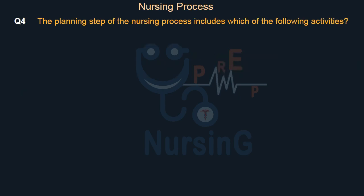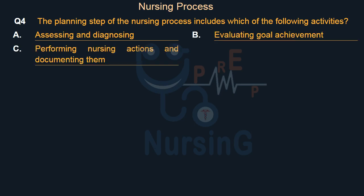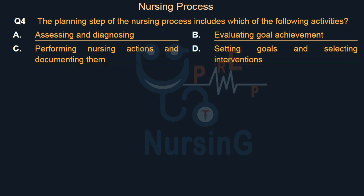The planning step of the nursing process includes which of the following activities? Option A: Assessing and diagnosing. Option B: Evaluating goal achievement. Option C: Performing nursing actions and documenting them. Option D: Setting goals and selecting interventions.